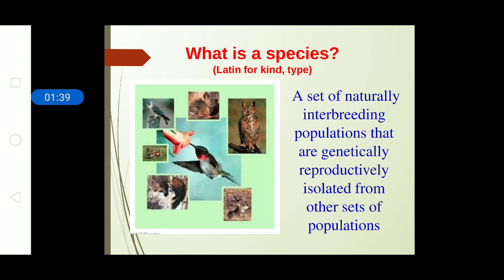What is a species? A species is a set of naturally interbreeding populations that are genetically and reproductively isolated from other sets of populations. The word 'species' is a Latin word denoting 'kind' or 'type.' The term 'naturally interbreeding' means the interbreeding must be natural. 'Genetically reproductively isolated' signifies the unique capability of a species — for example, a cat will mate with a cat, not a goat.